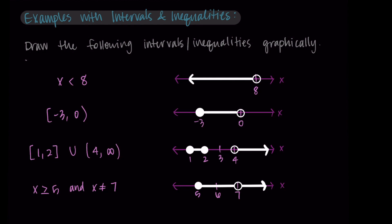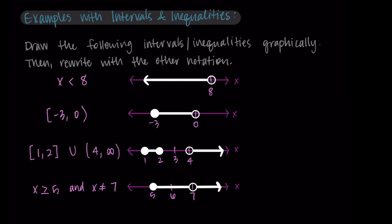Before moving on, let's rewrite all examples using the other notation. For x is less than 8, written as an interval: negative infinity to eight, using parentheses on both since we have an open circle and infinity — so the interval (−∞, 8). Then for the interval [−3, 0), written as an inequality: negative three is less than or equal to x is less than zero. We use less than or equal to when including the point, and just less than for the open circle.